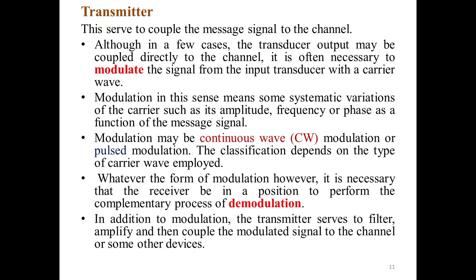The transmitter serves to couple the message signal to the channel. Although in a few cases the transducer output may be coupled directly to the channel, it is often necessary to modulate the signal from the input transducer with a carrier wave. Modulation means some systematic variation of the carrier, such as its amplitude, frequency, or phase, as a function of the message signal. Modulation may be continuous wave or pulse modulation, and the classification depends on the type of carrier wave employed. Whatever the form of modulation, it is necessary that the receiver be in a position to perform the complementary process of demodulation. In addition to modulation, the transmitter serves to filter, amplify, and couple the modulated signal to the channel.